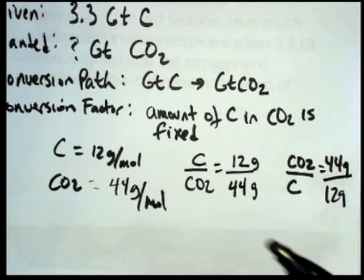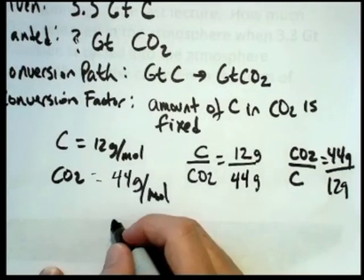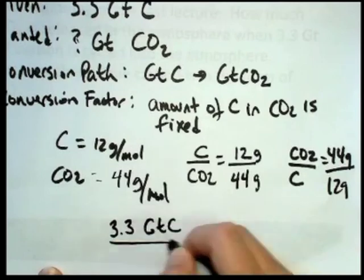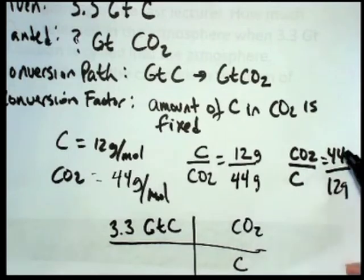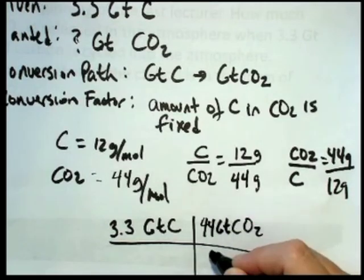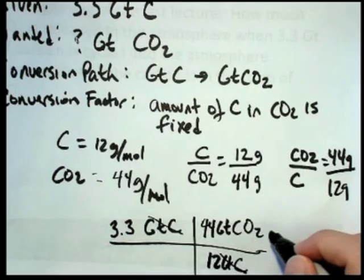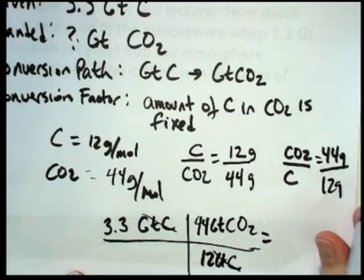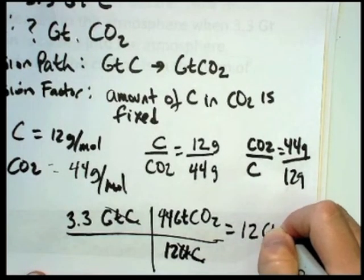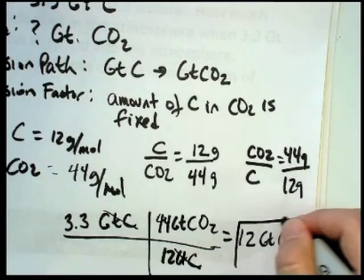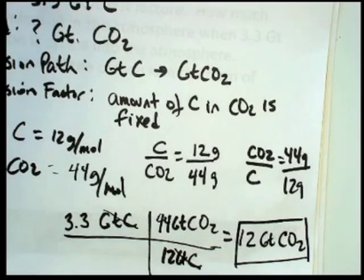Since I need to convert from gigatons of carbon to gigatons of carbon dioxide, I'm going to start with what's given, 3.3 gigatons of carbon, and I'd like to know how much mass of carbon dioxide that is. Then I'm going to have my unit of carbon on the bottom. Since this is a ratio, it doesn't matter what unit I use as long as it's a mass unit. So the ratio is 44 grams to 12 grams. It's also 44 kilograms to 12 kilograms or 44 gigatons to 12 gigatons. So that's the unit I'm going to use. Then this unit would cancel, and then now I have a nice conversion. You do the math, 3.3 times 44 divided by 12 is 12 gigatons of carbon dioxide. So that's how much carbon dioxide we're releasing per year into the atmosphere that needs to be dealt with. That's a lot of carbon dioxide.